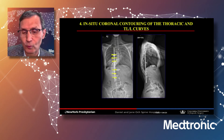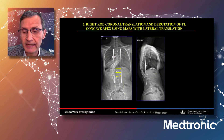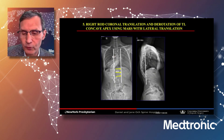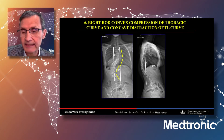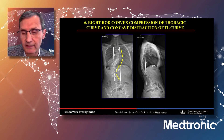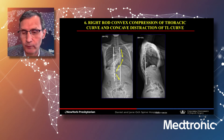Next, I do in-situ coronal contouring to optimize coronal alignment in both the thoracic and lumbar regions. I then add my right-sided rod, with the main maneuver being apical translation and derotation using reduction screws for the concavity of the lumbar curve, followed by compression of the thoracic convexity and distraction of the lumbar concavity — appropriate for sagittal plane realignment.